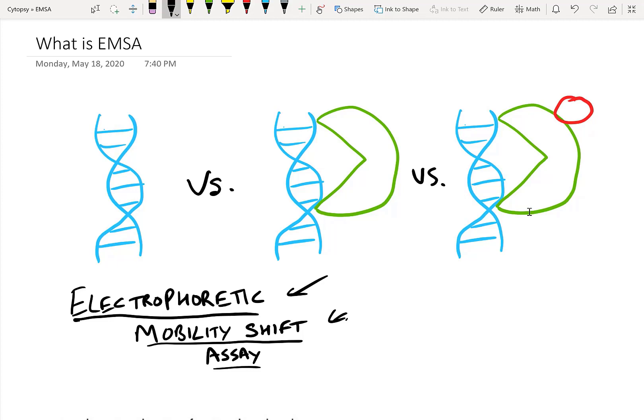Mobility shift - what does that mean? In EMSA, what we're doing is we're seeing whether a particular DNA binds to a particular protein or maybe a protein complex. And we do that by observing whether there's some kind of mobility shift when you run the DNA along with the protein or protein complex on a gel. An assay - well, we're testing stuff. That's what EMSA stands for.